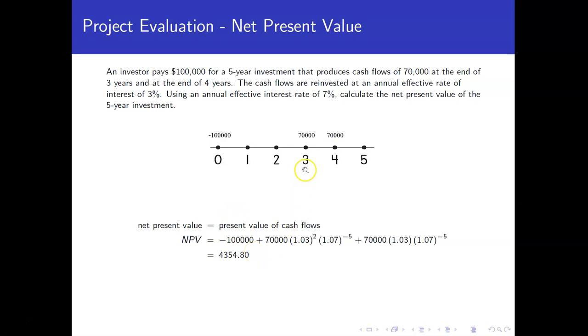What happens with this seventy thousand at time three? Well remember it's going to come out at time three, but we're going to invest it for two years. So we take the seventy thousand times the one point zero three squared. It's invested at that three percent interest rate, and then we'll pull it back to time zero using our seven percent annual effective rate.